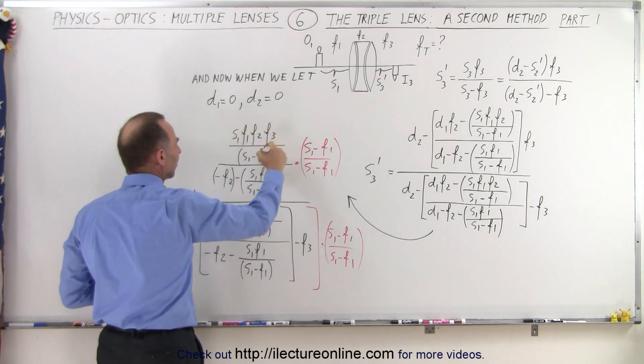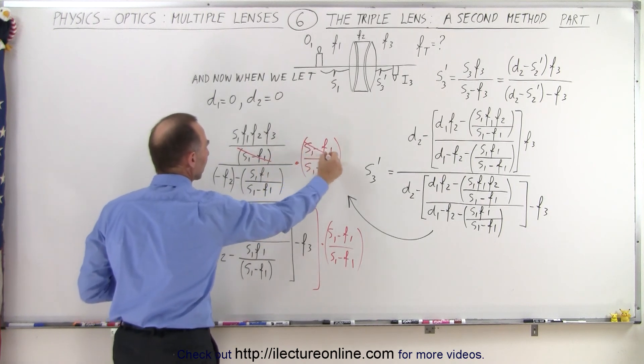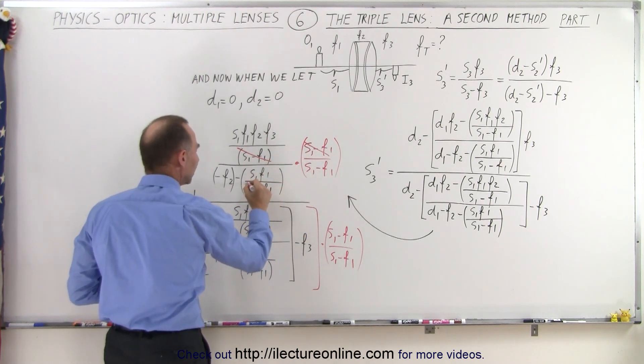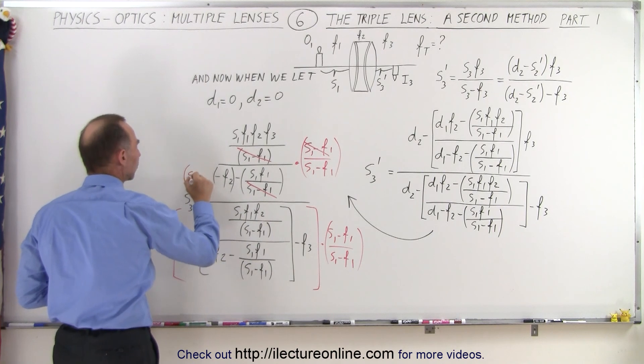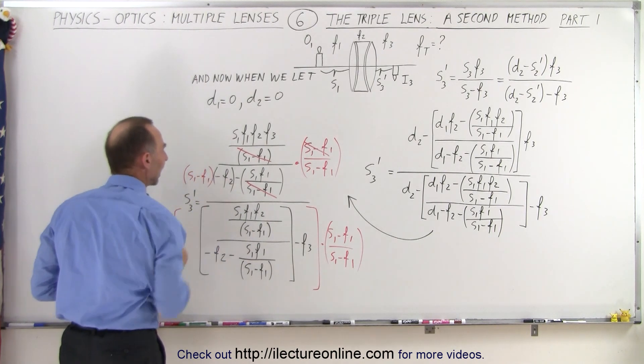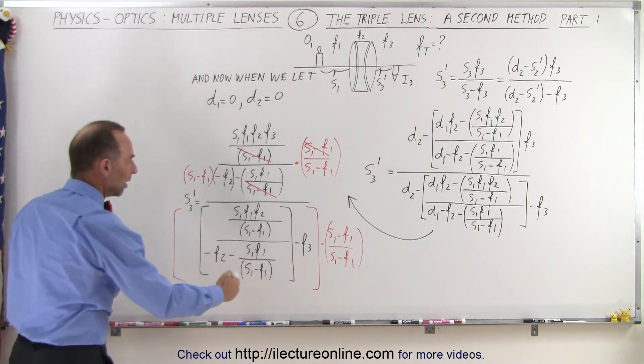we multiply this by this, this disappears. Multiply this times this, this disappears, but then here we have to multiply this by an S1 minus F1. Can't forget that. We do the same in the denominator.